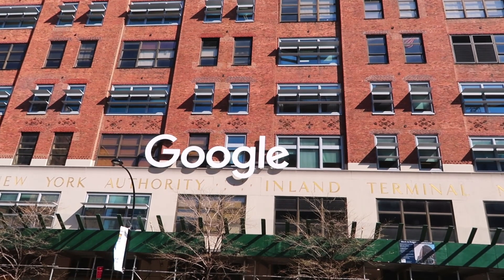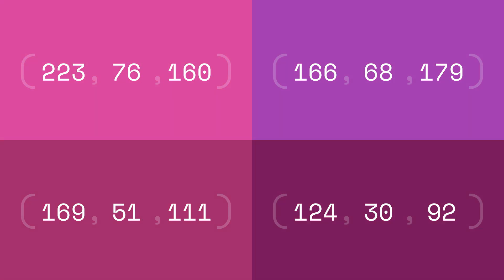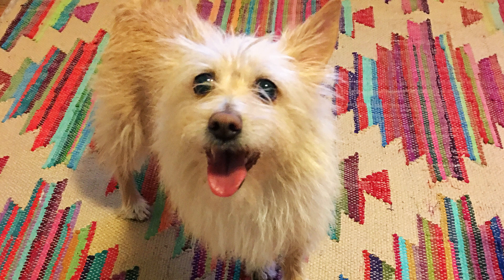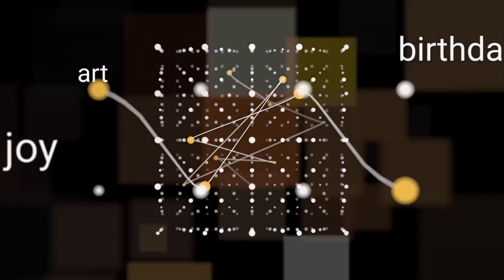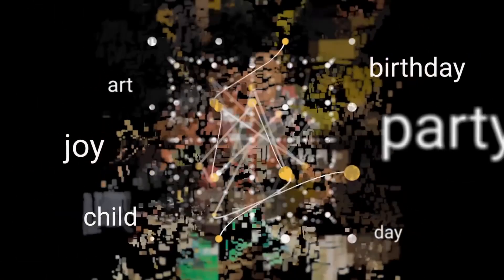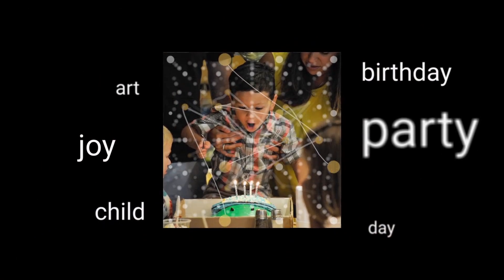From the computer perspective, the image is really just an array of numbers. Or if it's color, it would be three arrays of numbers. By themselves, these pixels don't mean anything to a computer. The computer has to interpret what they are.